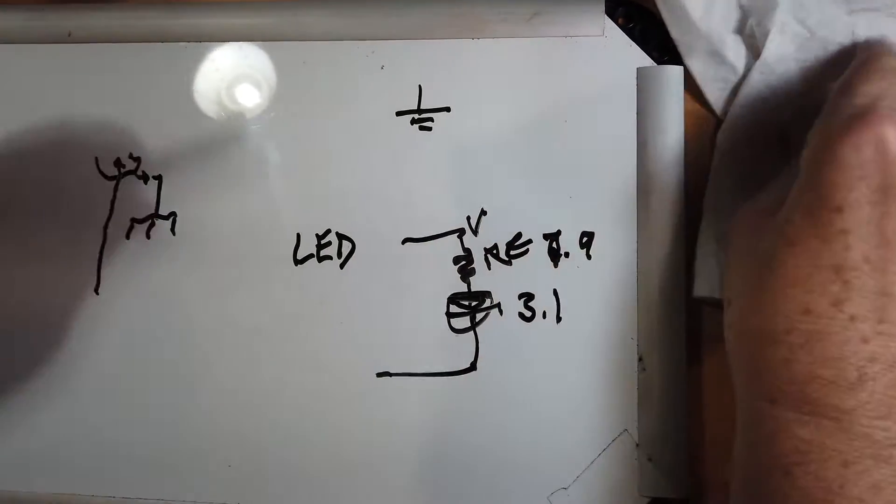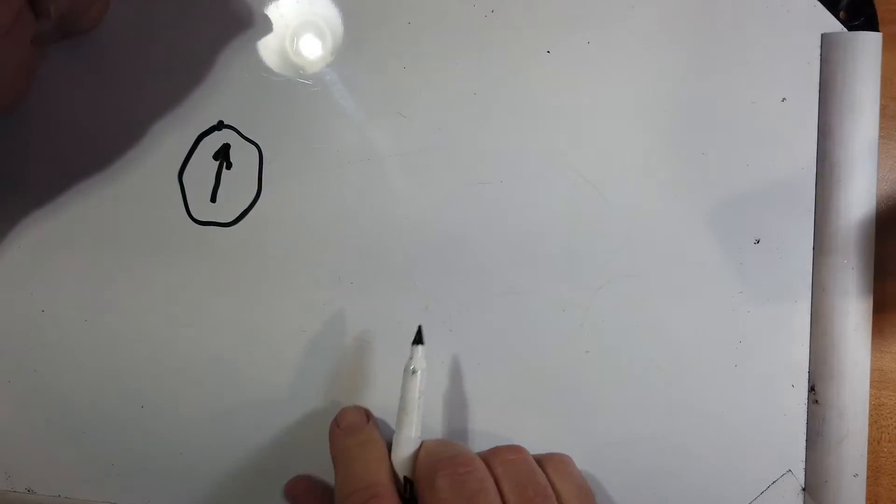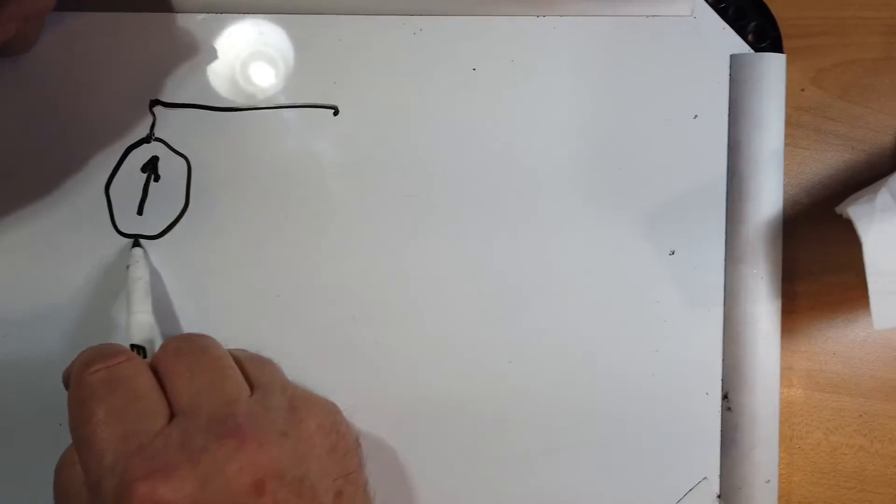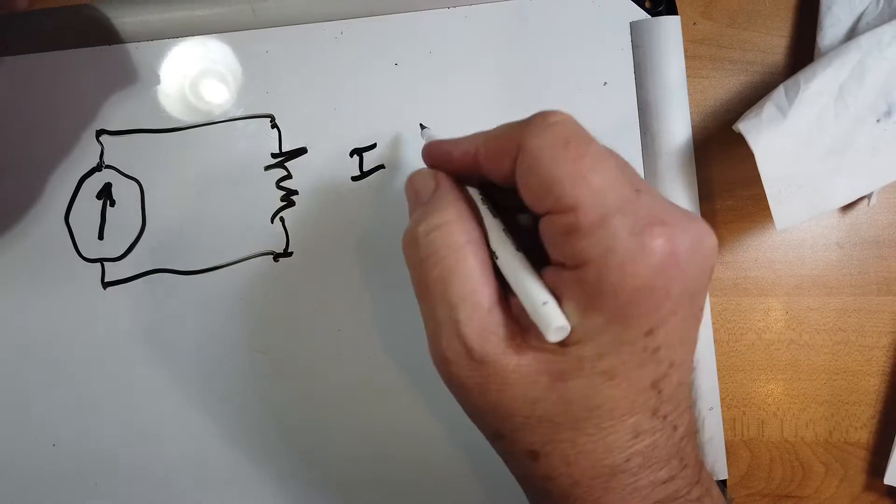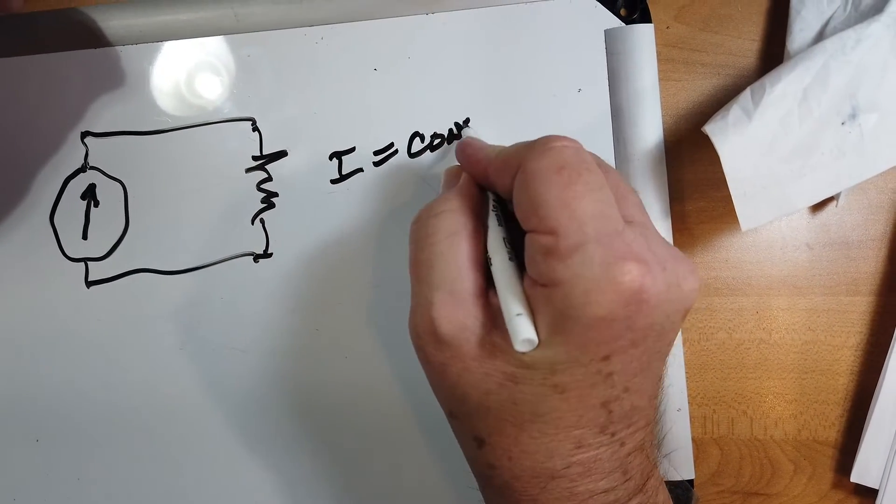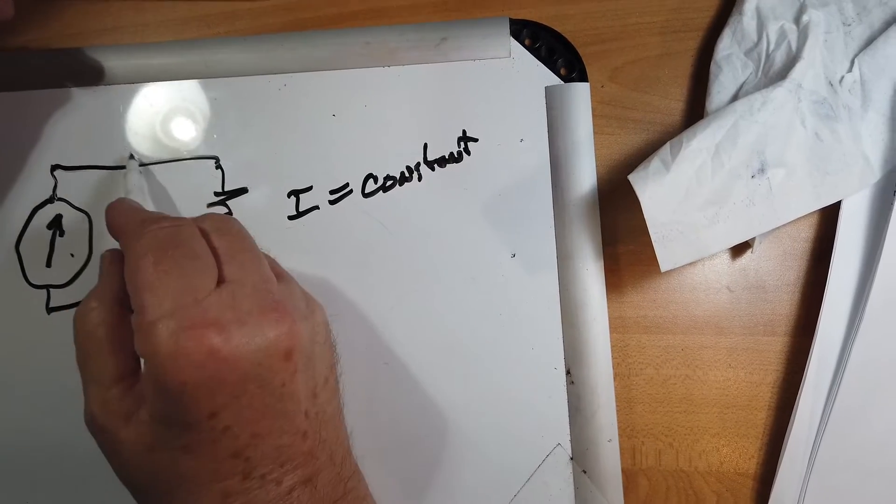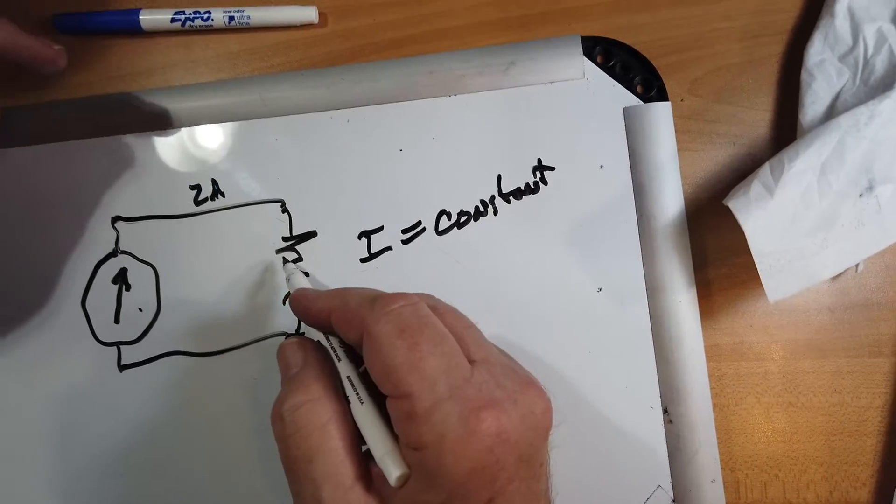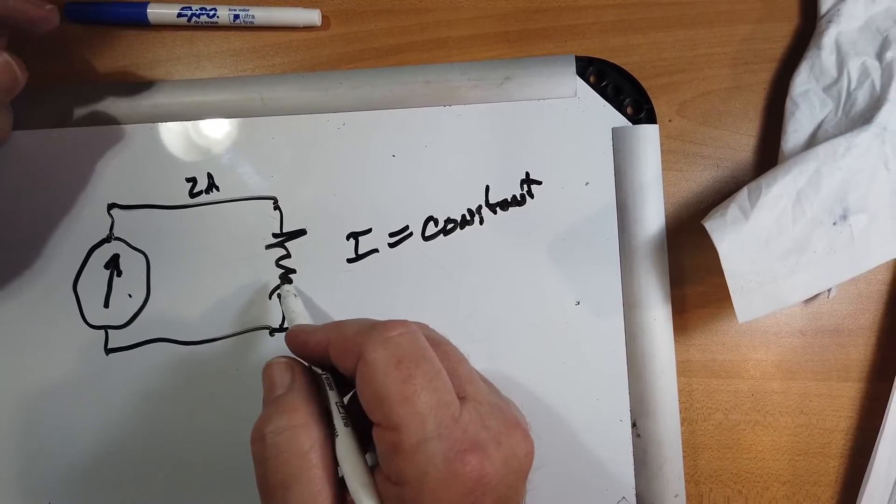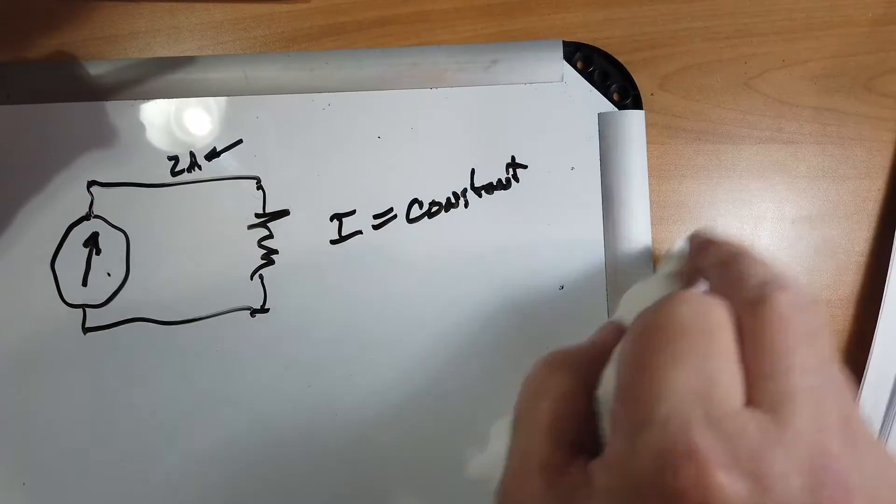So the way modern LEDs work is they have what's called a current driver. The symbol for a current driver is this. Now what this does, if you send this to a load out here, it does not matter what the load is, the current will be a constant. And it's easy to build circuits that do this. If this voltage is 6 volts and you get 2 amps, let's say it's a 2 amp constant, you put 6 volts there. If you put a high resistance, you'll get 100 volts, if you put a low resistance, you'll get a fraction of a volt, but it will always stay 2 amps. And this is how modern LEDs are built.